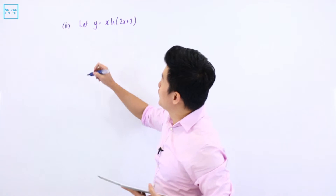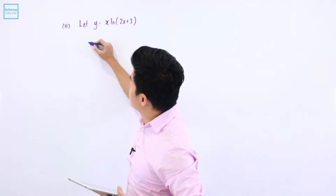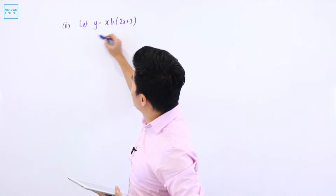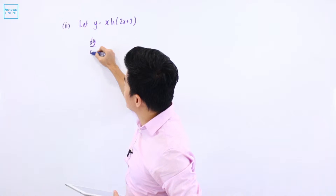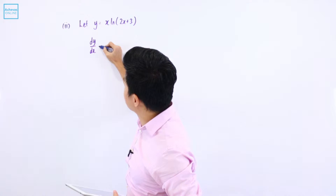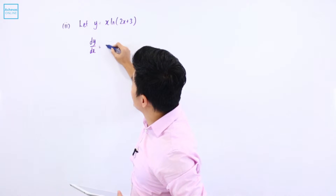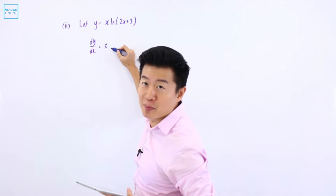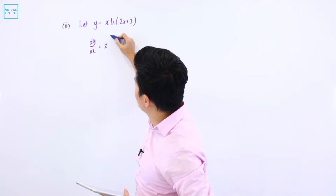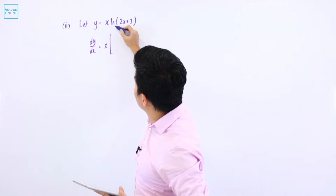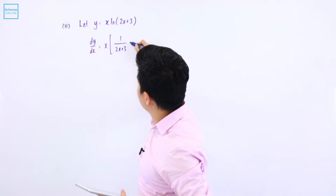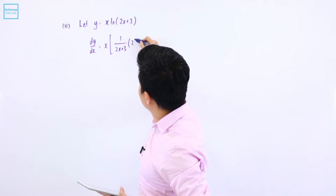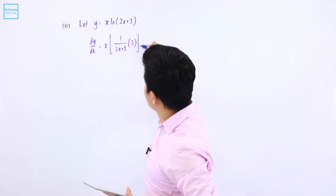I'm going to differentiate this with respect to x. If I were to let y be equal to this, that means I'm trying to find dy/dx. And that will be holding this constant — I'm applying the product rule. Differentiating this, it is 1 over 2x plus 3, multiplied by 2.